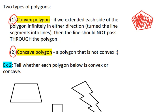If we extend each side of the polygon infinitely in either direction, so if we turn the sides, which are line segments, into lines, then the lines should not pass through the polygon.